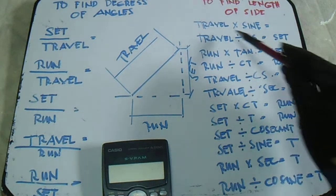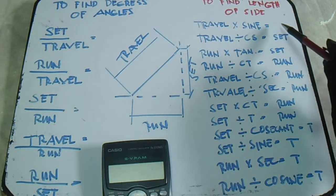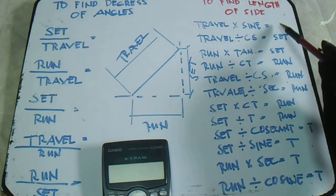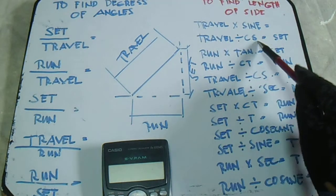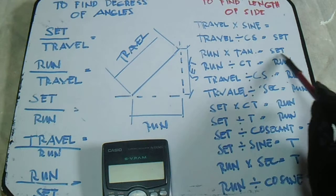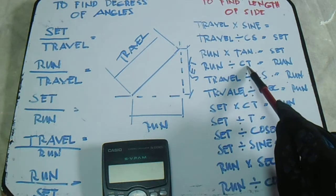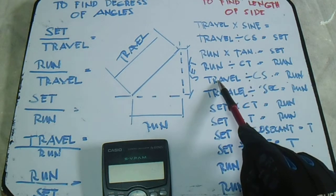Travel multiplied by sine equals set. Travel divided by cosecant equals set. Run multiplied by tangent equals set. Run divided by cotangent equals set.